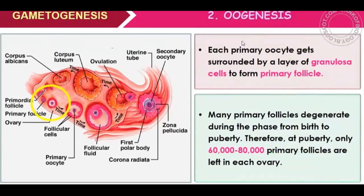Each primary oocyte gets surrounded by a layer of granulosa cells to form primary follicles. The primary oocytes have granulosa cells, and the primary follicles keep them around.